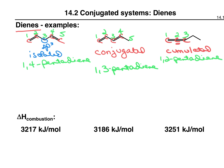So again, we have isolated dienes where the alkenes are separated by an sp3 carbon, conjugated dienes written as double bond–single bond–double bond but with continuous sp2 hybridized carbons, and cumulated dienes where one carbon is common to two alkenes.